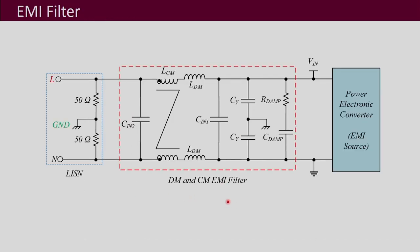Let us see how an EMI filter looks inside. This is an example of a pi type EMI filter — pi because you can see a C-L-C topology used for the filter. This is your power electronic converter which is the source of the EMI, and from here the supply will be coming. This is the equivalent circuit of the LISN — the line impedance stabilization network. When you practically use it you would not put a LISN, but when measuring conducted EMI you will be using a LISN, which is why this equivalent circuit is shown.